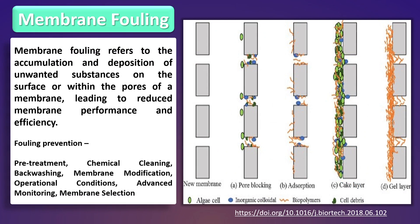Membrane fouling refers to the accumulation and deposition of unwanted substances on the surface or within the pores of the membrane, leading to reduced membrane performance and efficiency. Membrane fouling is a common challenge in various industrial processes where membranes are used for separation, filtration and purification purposes.